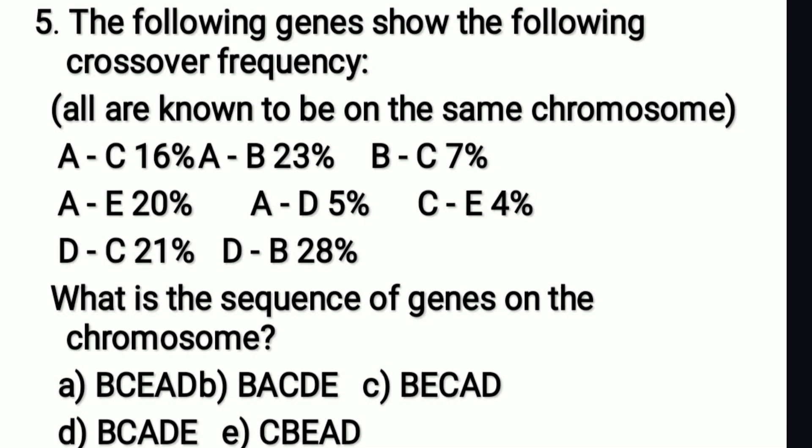The right answer is option C: B-E-C-A-D. B-C is 7%, A-C is 16%, so A-B equals D-C plus A-C = 16 + 7 = 23%. Then A-C is 16%, A-D is 5%, so C-D equals A-C plus A-D = 16 + 5 = 21%. To find the answer for this type of question, draw a line and mark the genes on it.